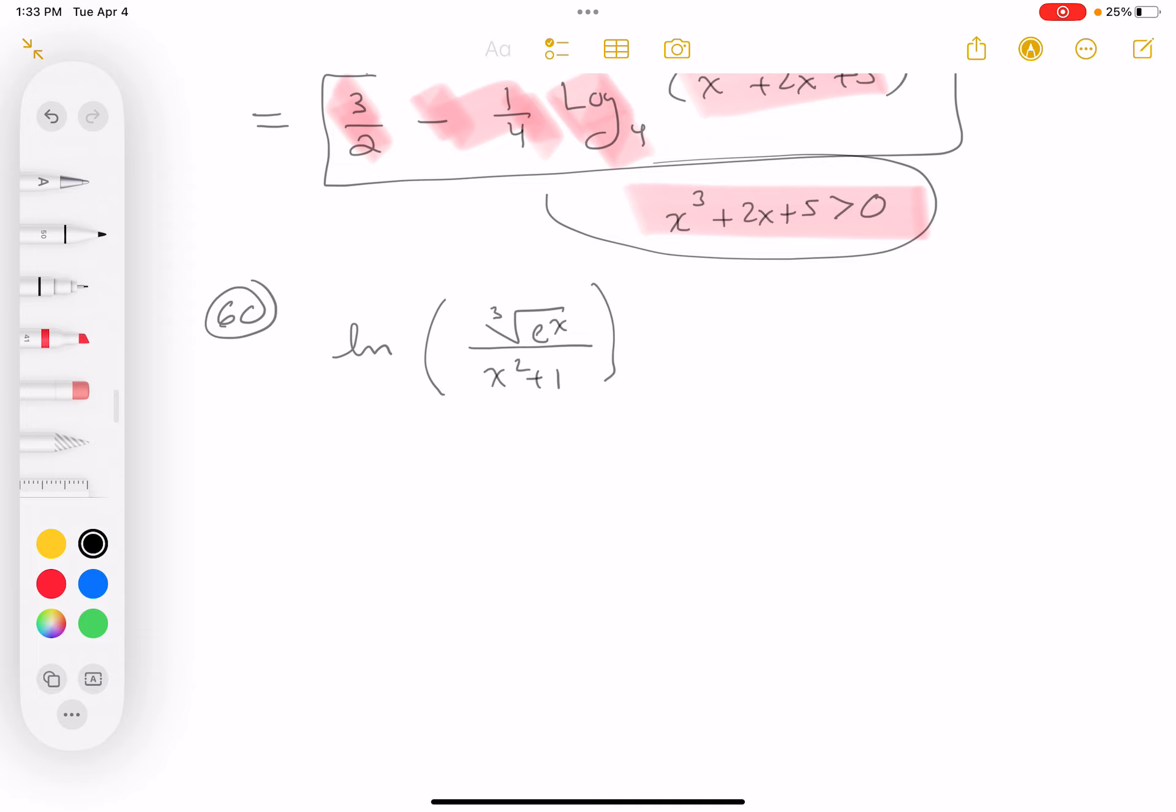All right, kind of looking at that, I'm going to say there's no restrictions on it because e to the x is certainly always going to be a non-negative number, and x squared plus 1 is always going to be positive. So really, no troubles at all.